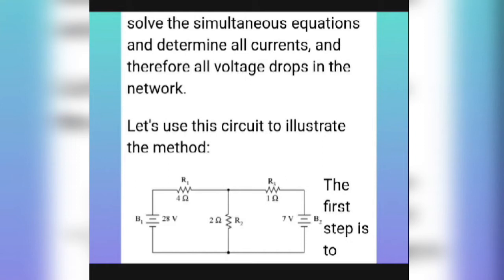Let's use this circuit to illustrate the method. B1 is a battery of 28 volts. R1 is a resistance of 4 ohms. R2 is a resistance of 2 ohms, connected in series. R3 is a resistance of 4 ohms. The second battery B2 is 7 volts.